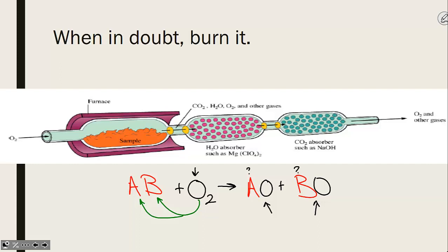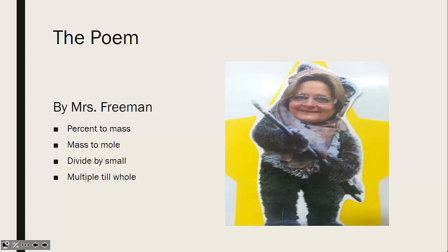If we know the mass of a particular element or its percent, and the fact that elements always combine in whole number ratios, we can find the empirical formula. The process has four steps, remembered by a poem: percent to mass, mass to mole, divide by small, multiply till whole. Each line is one step toward finding an empirical formula from percent composition.